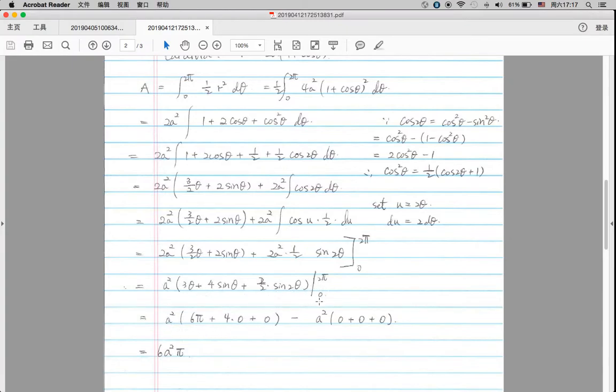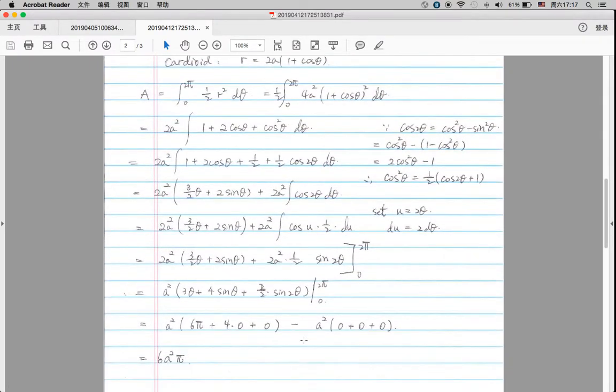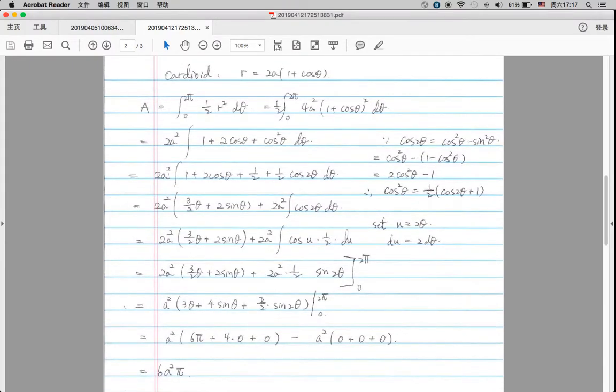and then minus by substituting 0 into this formula. We'll take the difference, and this is our final solution for the area of a cardioid.